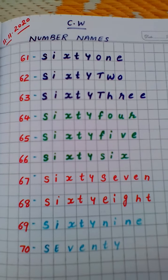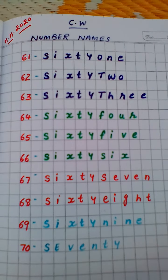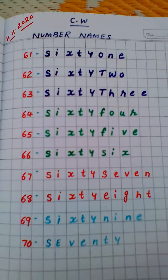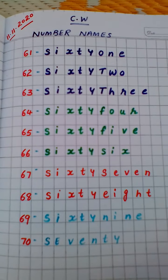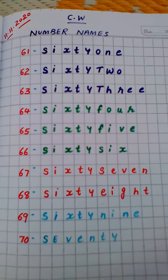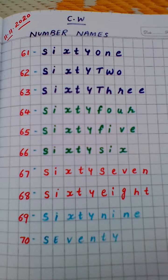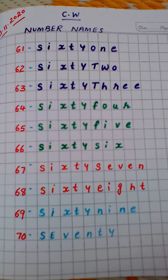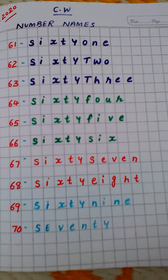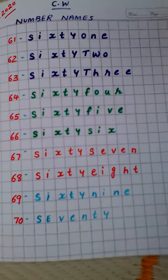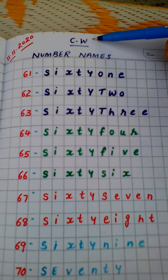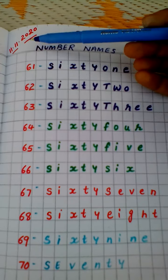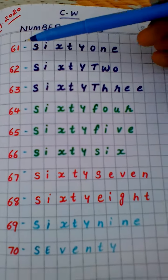Dear children, today we will learn one more topic: number names. In last class we have learned 51 to 60. Today we will learn 61 to 70. First, write classwork, number names, and put the date.